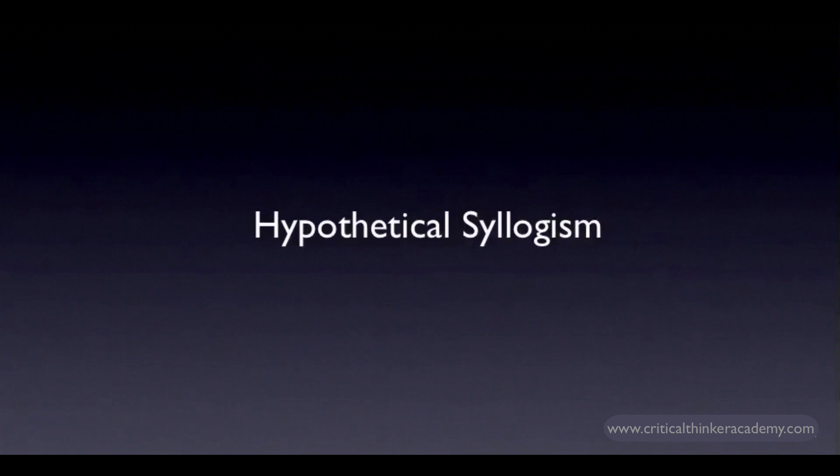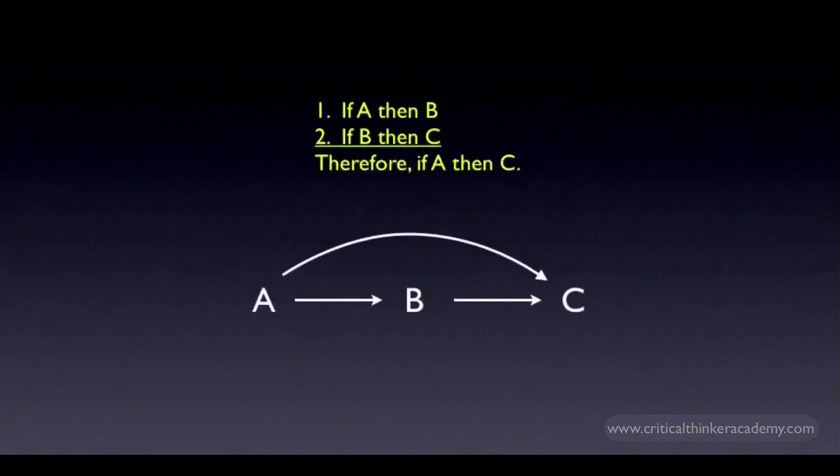Before we move on to the invalid forms, here's one more valid conditional form that you should know. It's sometimes called hypothetical syllogism or hypothetical argument, or more informally, it's sometimes called reasoning in a chain. It's obvious why it's called this when you see the argument form in action.